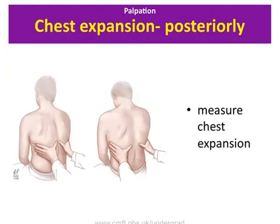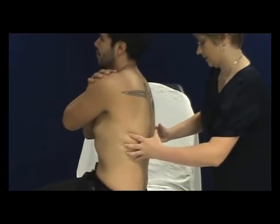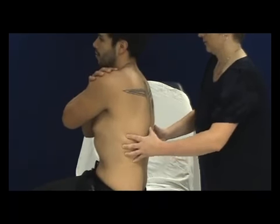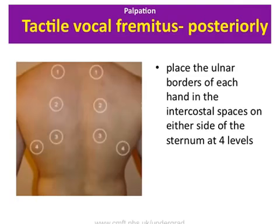Assess chest expansion at two levels on the back of the chest by placing the palms of the hands symmetrically on either side of the chest wall with the thumbs pointing towards the midline. Ask the patient: 'Could you please take deep breaths in and out?' Feel whether the fingers move apart symmetrically. The thumbs should separate by at least five centimetres. An additional test which may be performed here but is not essential is tactile vocal fremitus. Fremitus should be felt for in four different areas on the posterior chest wall. Ask the patient: 'Would you mind saying 111 for me?' and compare the right and left sides at each step using the two hands together.